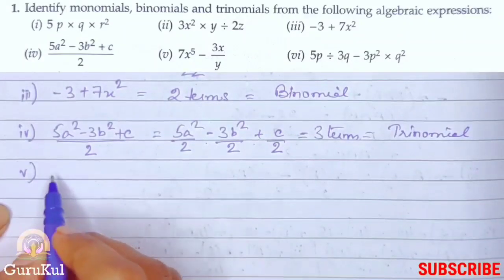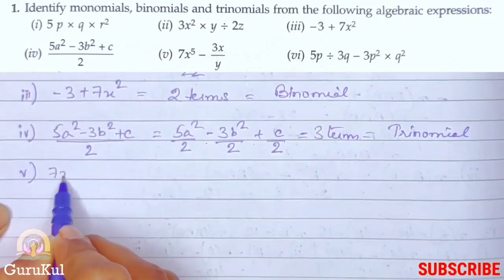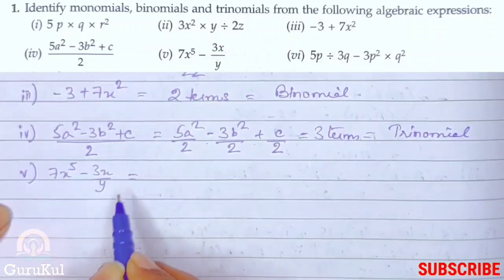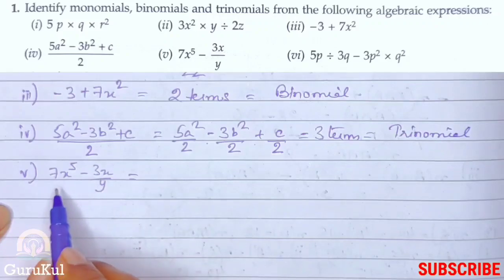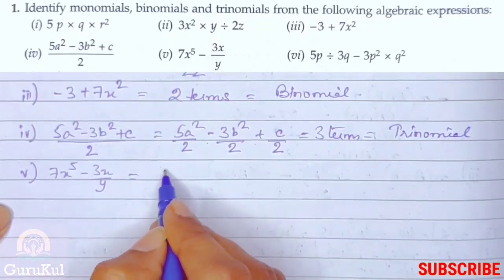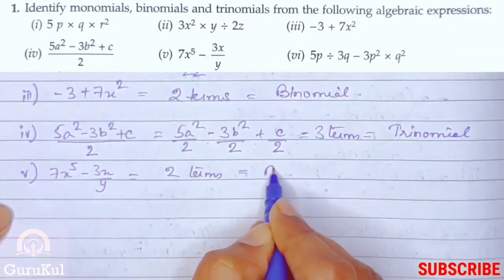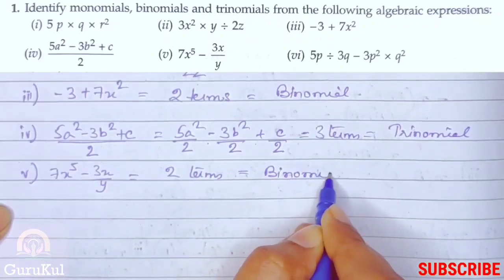Fifth one, 7x to the power 5 minus 3x by y. See, separated by a negative sign. Hence, having two terms. Hence, we are going to call it binomial.